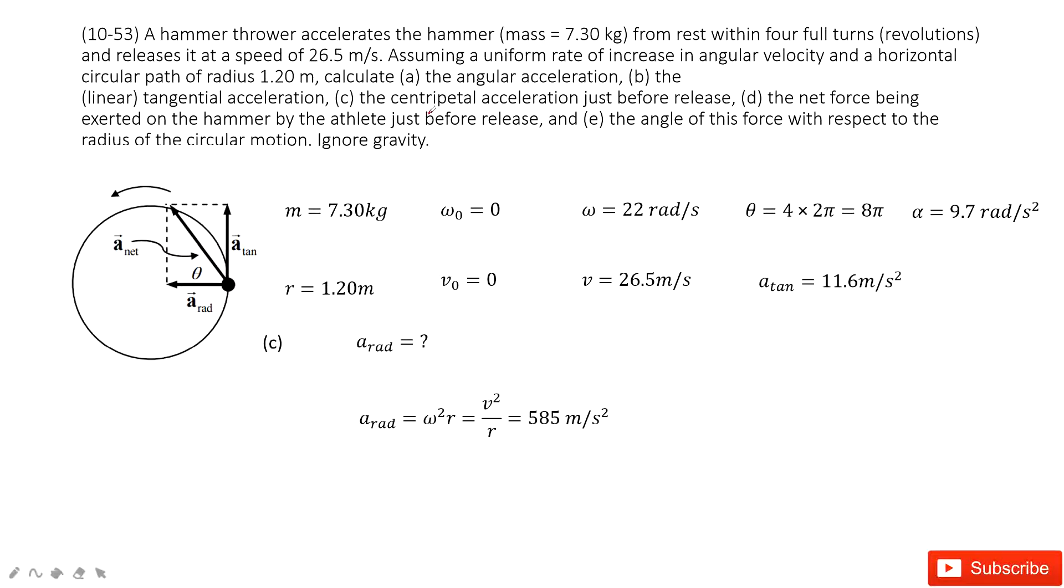The third part is the centripetal acceleration. Centripetal acceleration is v squared divided by r, or omega squared times r.